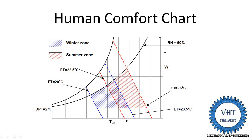Relative humidity is comfortable between 30 to 70 percent. Below 30% relative humidity, the skin becomes too dry, and if relative humidity increases above 70%, the skin becomes too sticky. That is why relative humidity is kept between 30 to 70 percent for both winter and summer conditions.